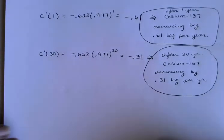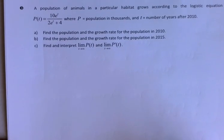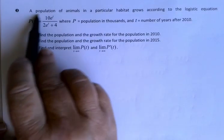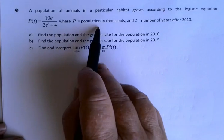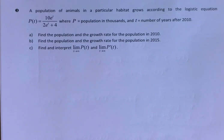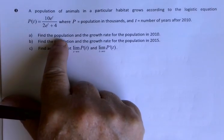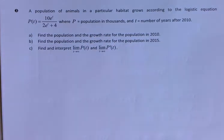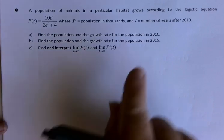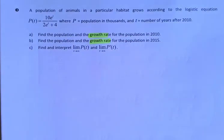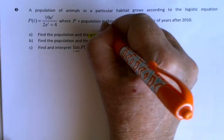I have one more question. Here we have a population of animals in a particular habitat grows according to this logistic equation. p represents the population in thousands, and t is the number of years after the year 2000. So we'd like to find both the population and the growth rate in 2010 and again in 2015. And then in part c, we'll talk about some limits. Since I want growth rates, that immediately tells me I need the derivatives. As soon as I see growth rates or rates of change, that's the derivative.